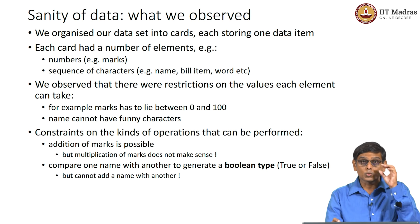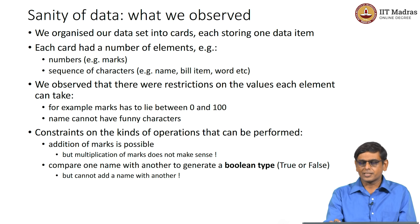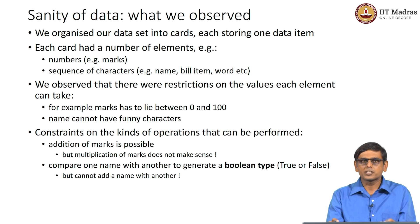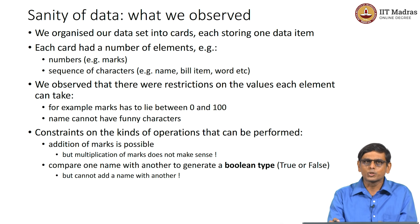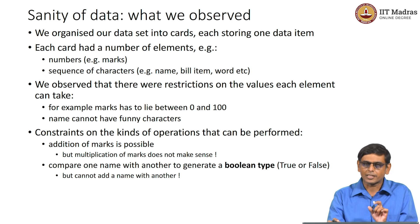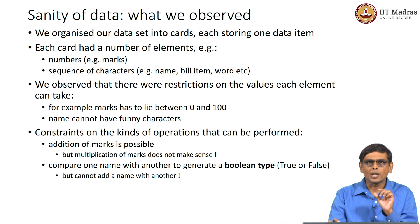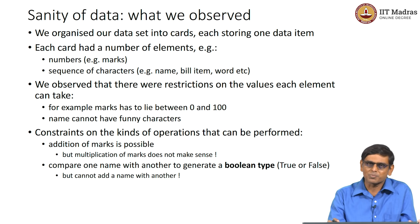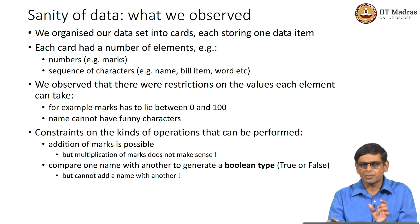What we observed is that each data item stored in the card had a number of elements. These elements could be numbers, or a sequence of characters like a string representing a name, an item category, or a word. Each of these elements has some restrictions on the values it can take. For example, marks — physics, chemistry, mathematics, or total — must lie between 0 and 100; they cannot be negative or excessively large like 3000.